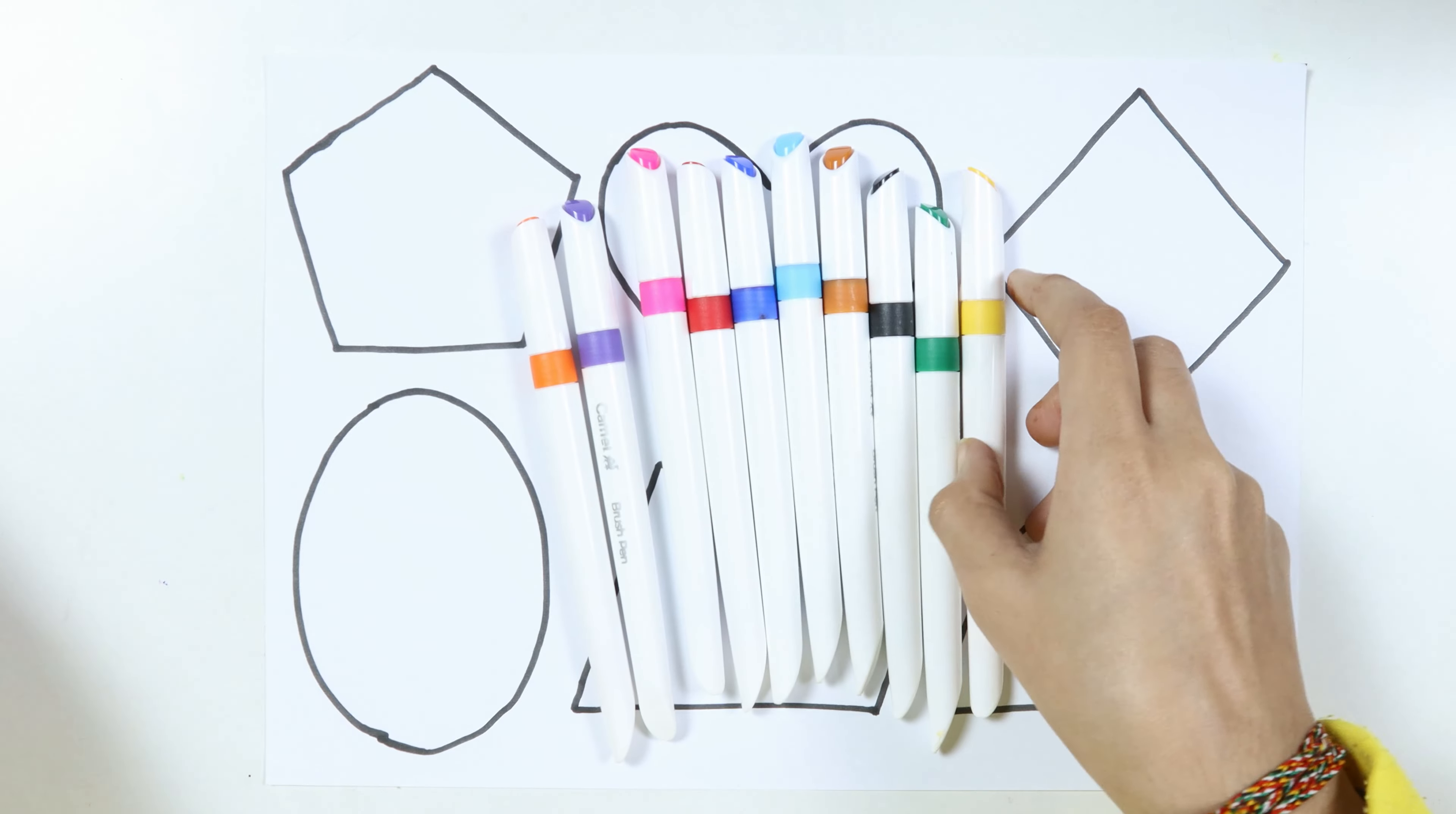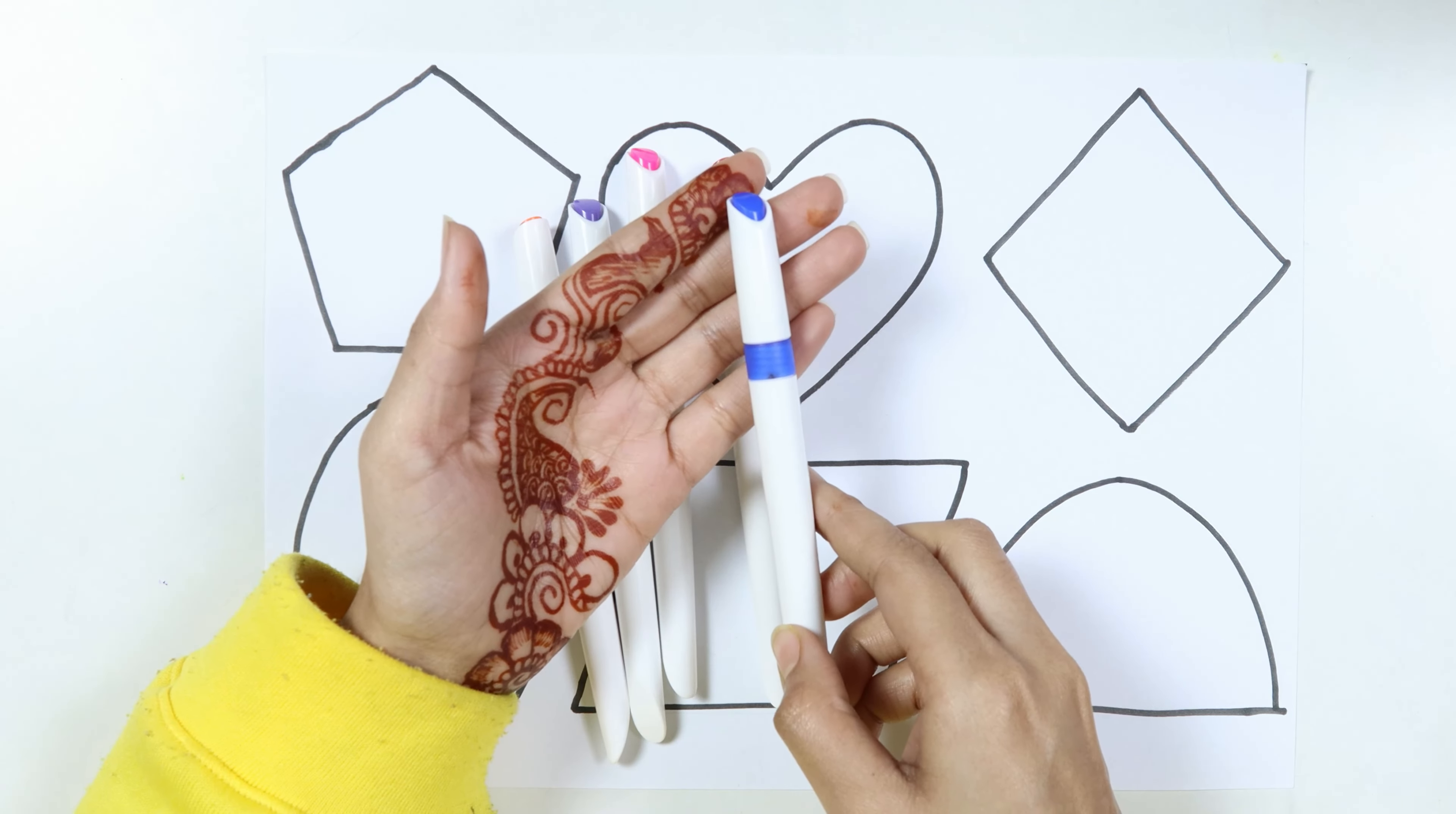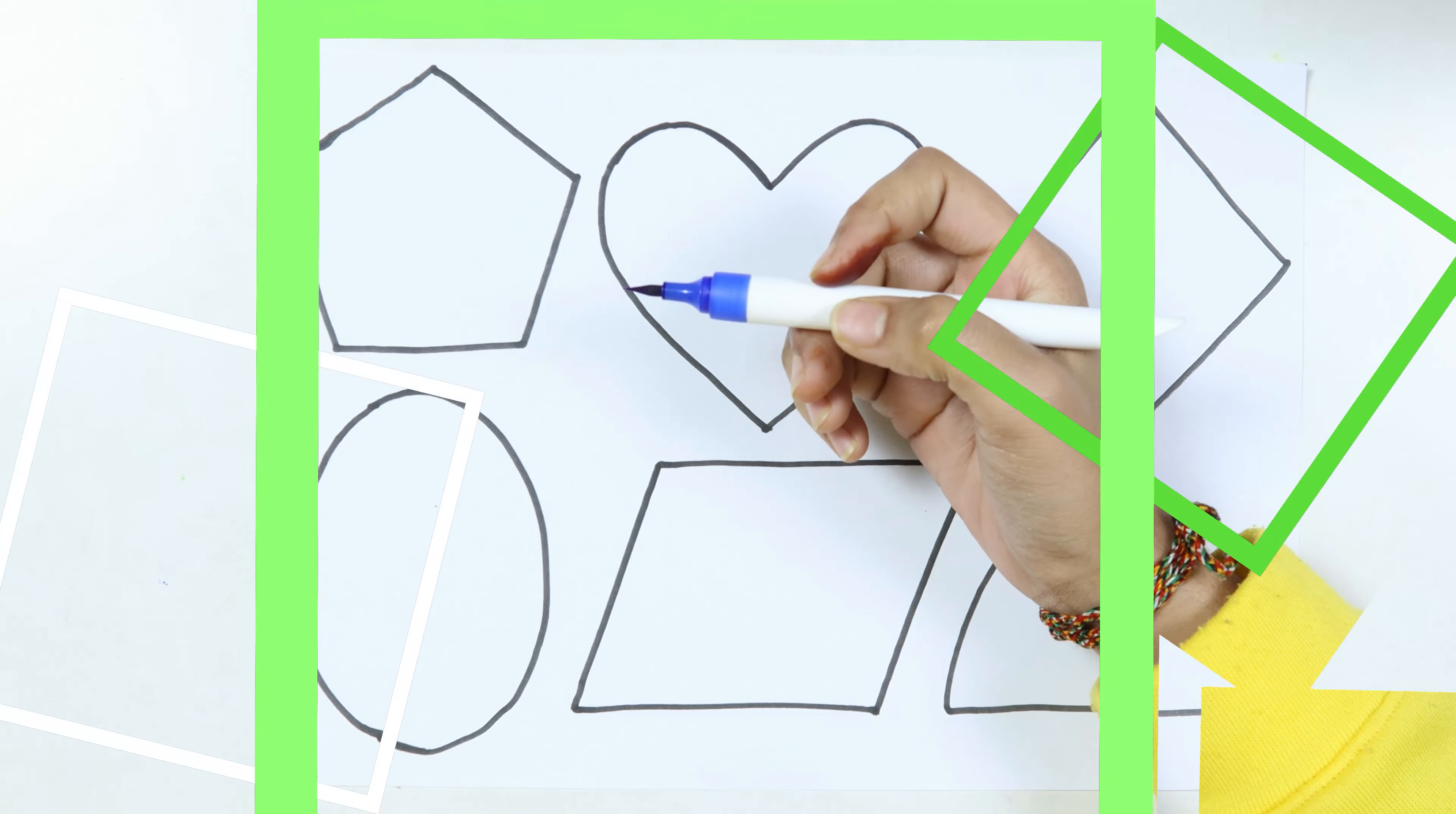Light green color. Yellow color. Dark green color. Black color. Brown color. Sky blue color. Blue color. Red color. Pink color. White color. Violet color. This is the orange color. Blue color.